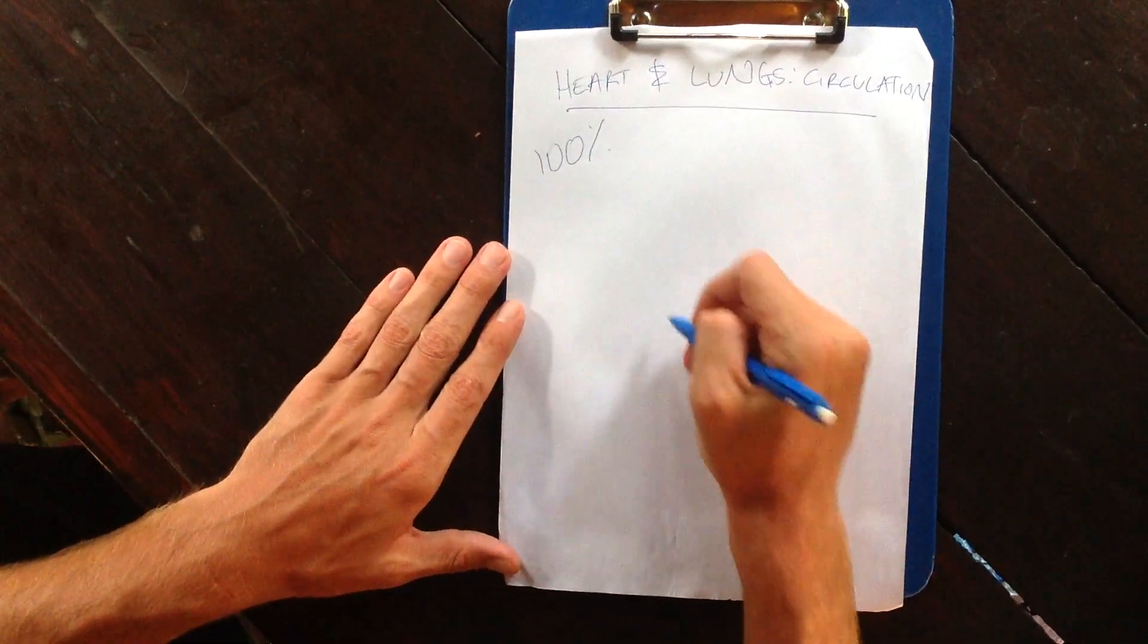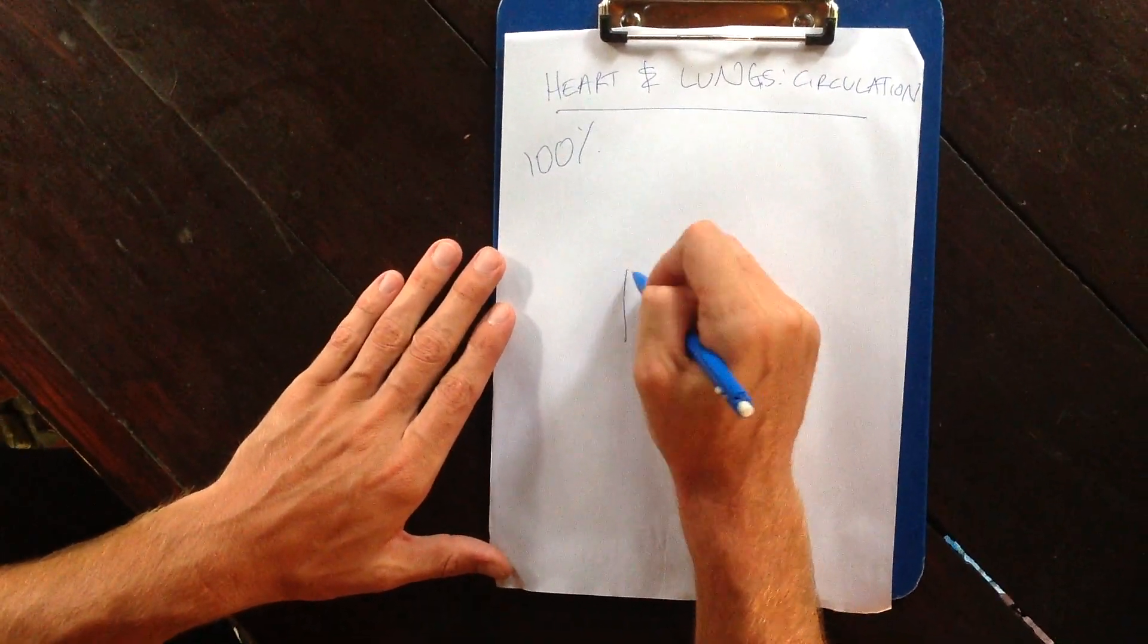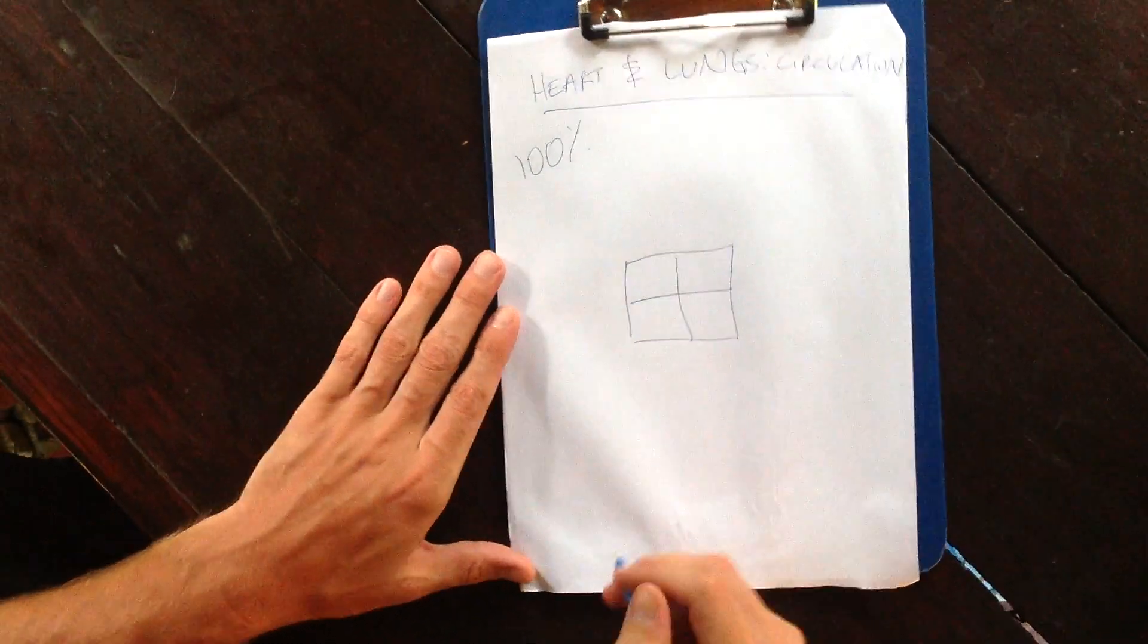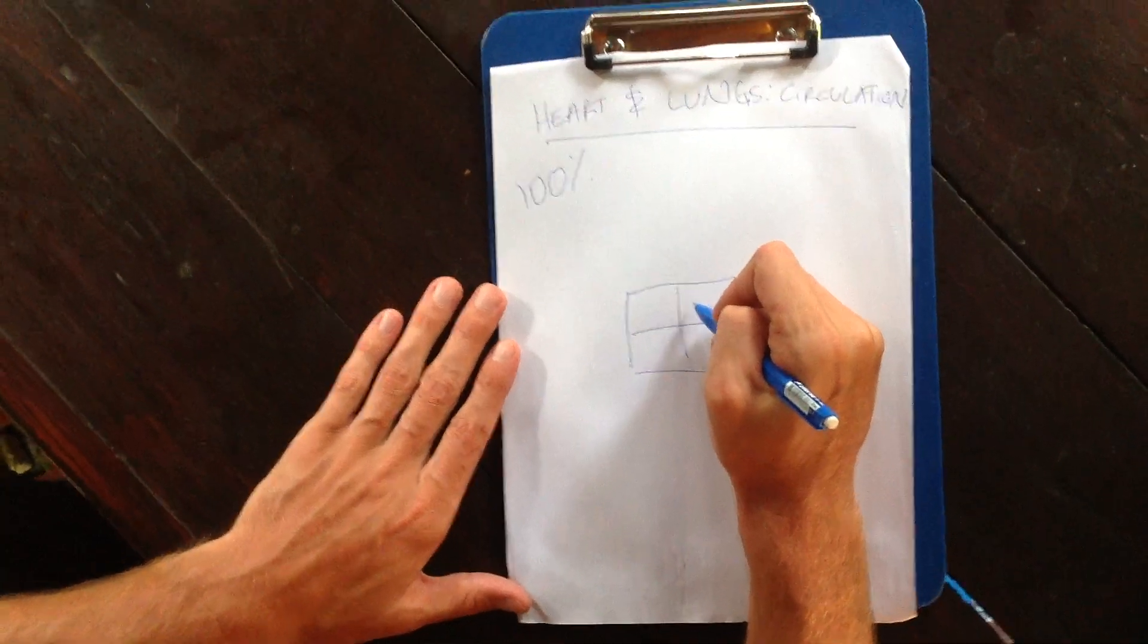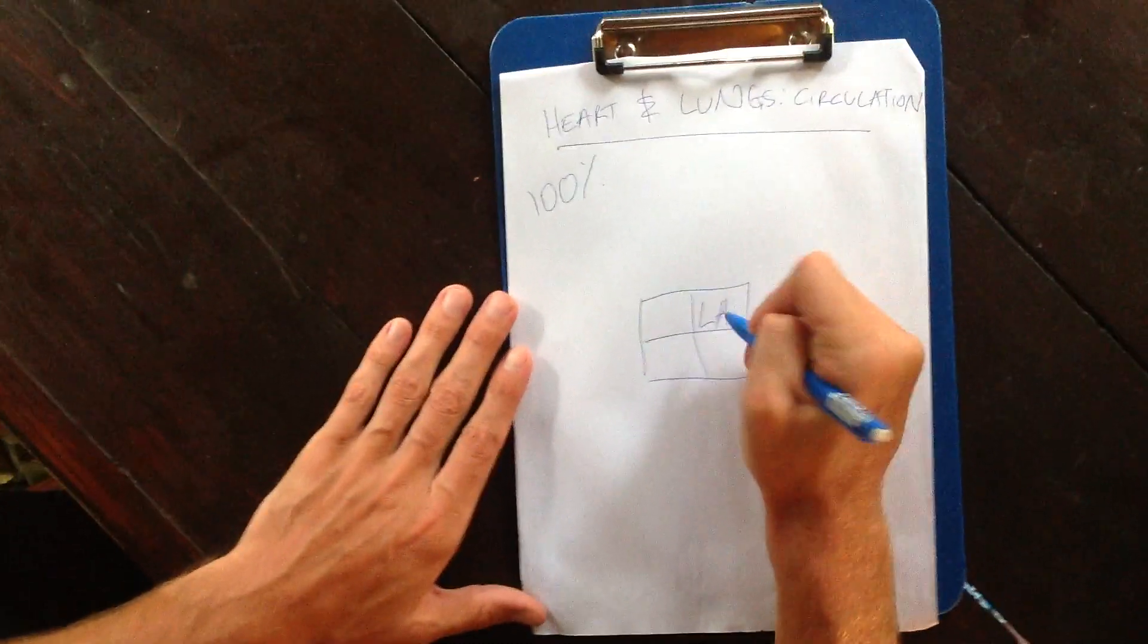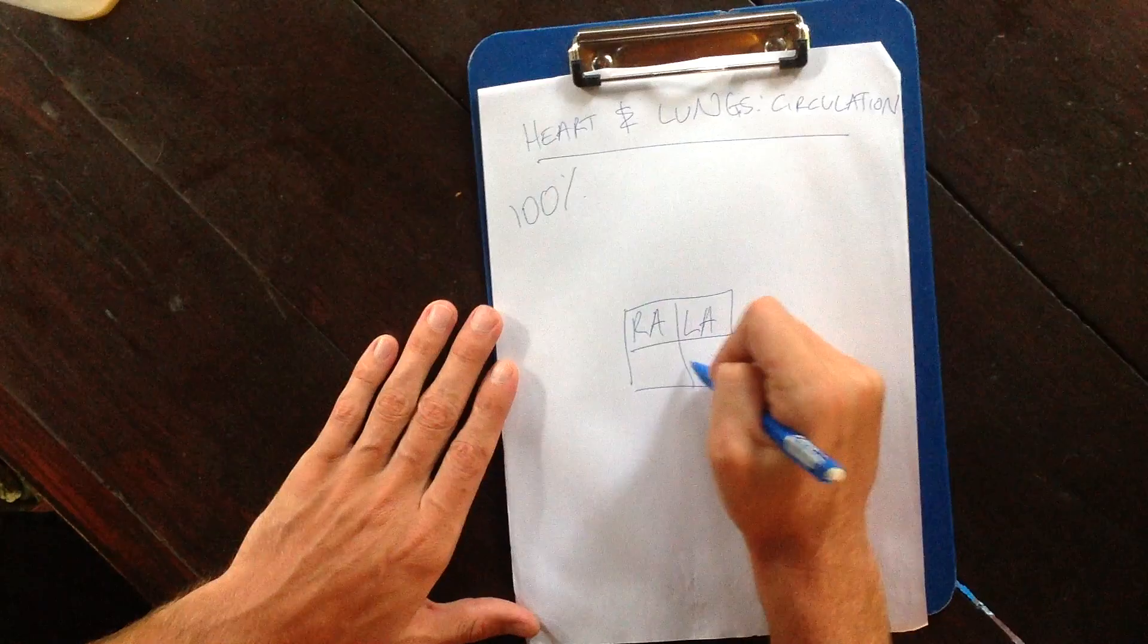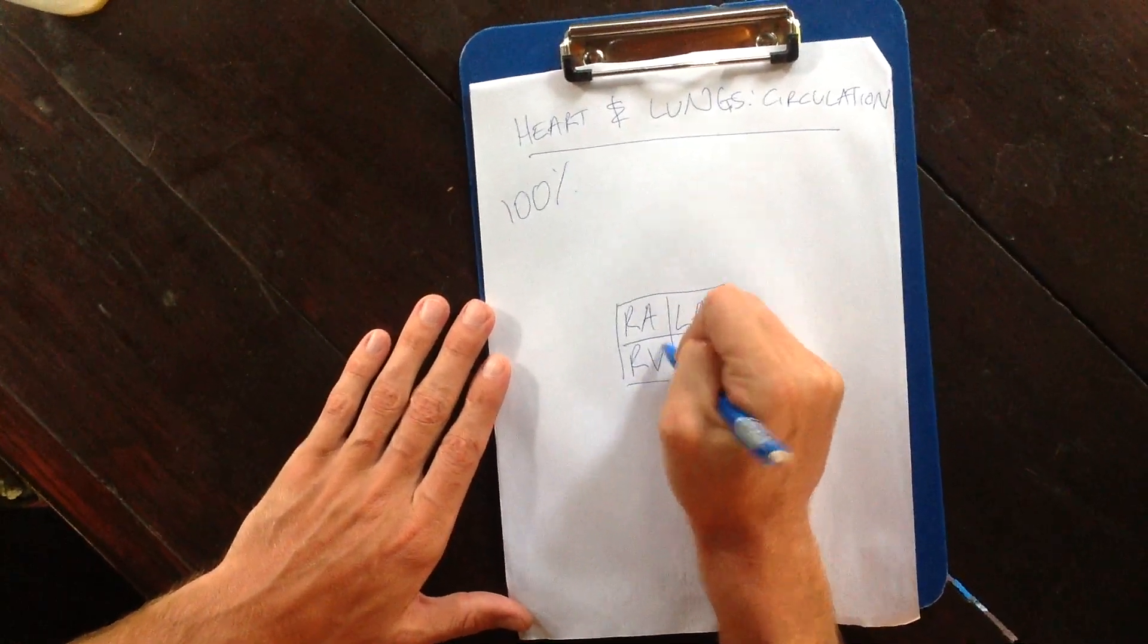But heart and lungs is the key topic today, and I'm going to give you a couple of key pointers. Draw a box on your blank piece of paper. From here, think about your left and right sides. That's a key tip to give away. You've got your left atrium and your right atrium, your left ventricle and your right ventricle.